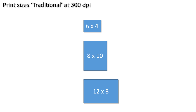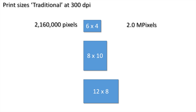So really, megapixels only play an important role when we're printing. I've got here the traditional print sizes at 300 DPI, which is the benchmark standard for printing at 300 dots per inch — it means you don't lose any quality. With a six by four print, you need two million one hundred and sixty thousand pixels, which equates to roughly two megapixels.